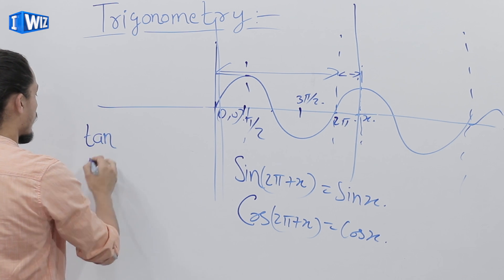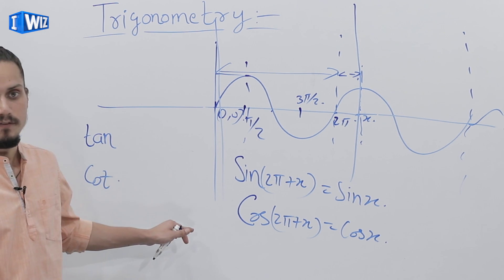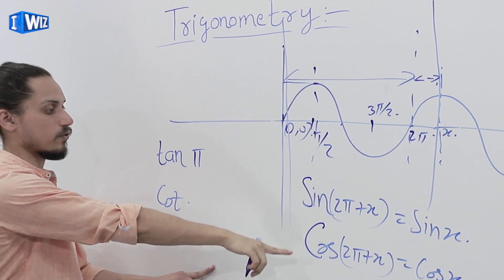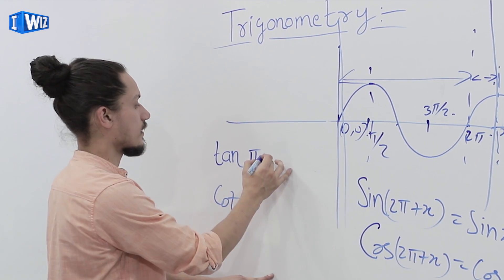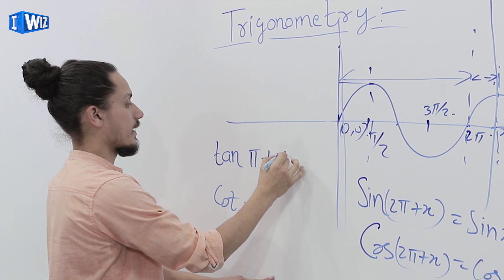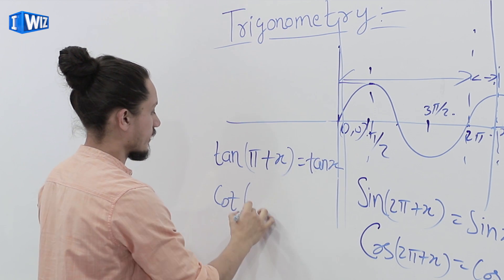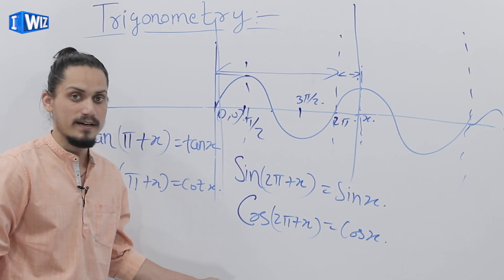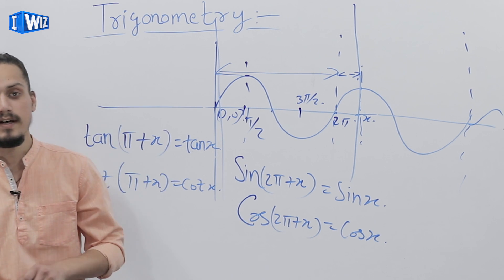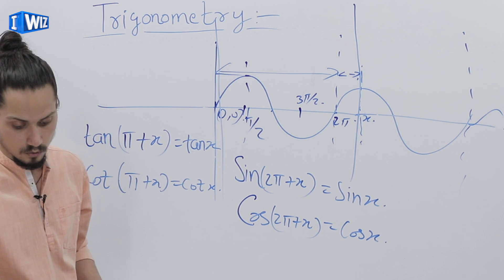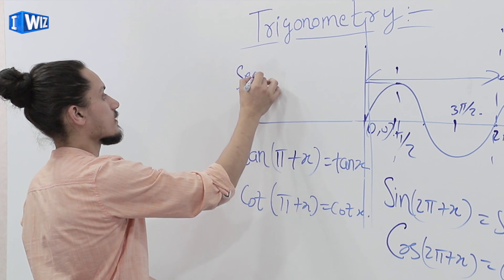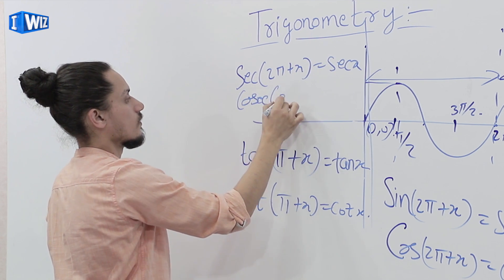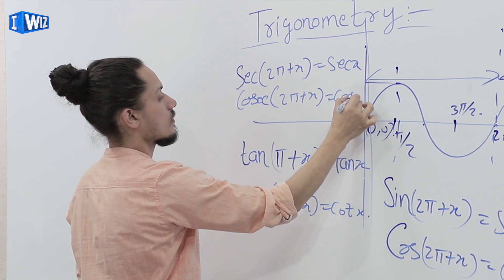For tangent and cotangent, their values repeat after π, that is after 180 degrees — whereas sine and cosine repeat after 2π, that is 360 degrees. So for tangent: tan(π + x) = tan(x), and for cotangent: cot(π + x) = cot(x). For secant and cosecant: sec(2π + x) = sec(x) and cosec(2π + x) = cosec(x).